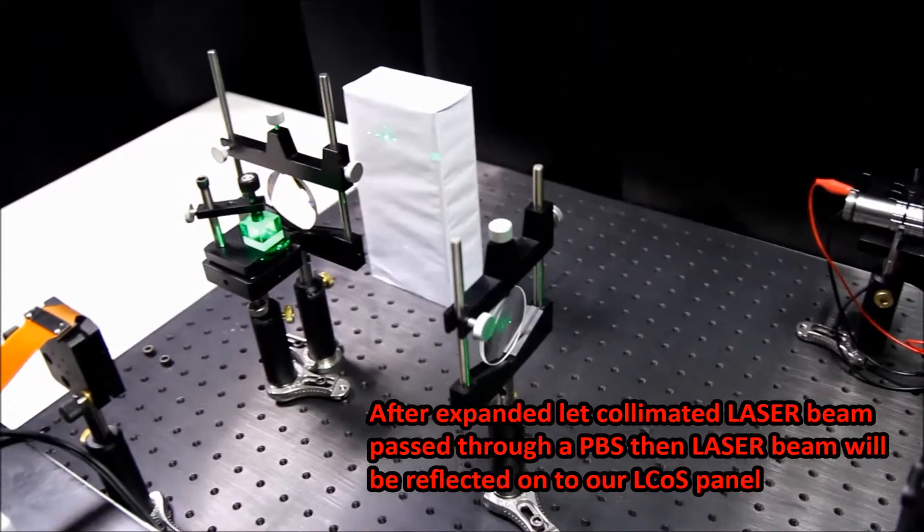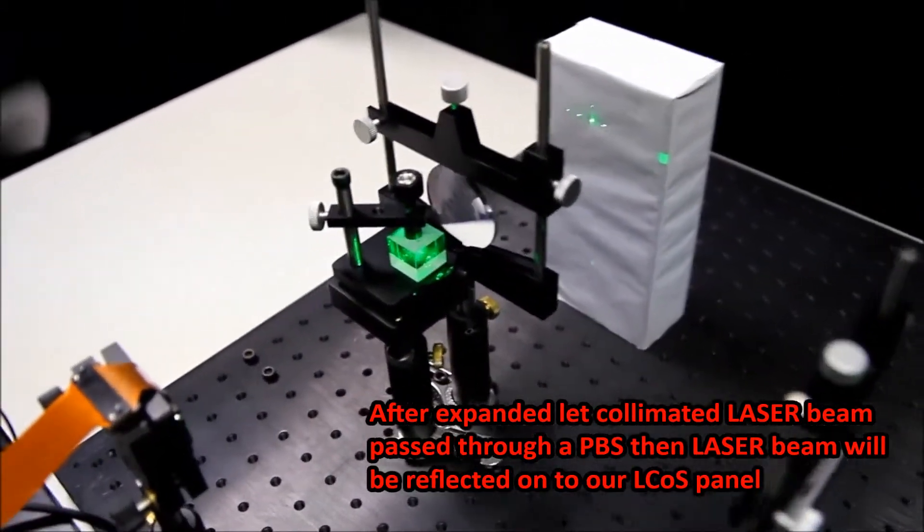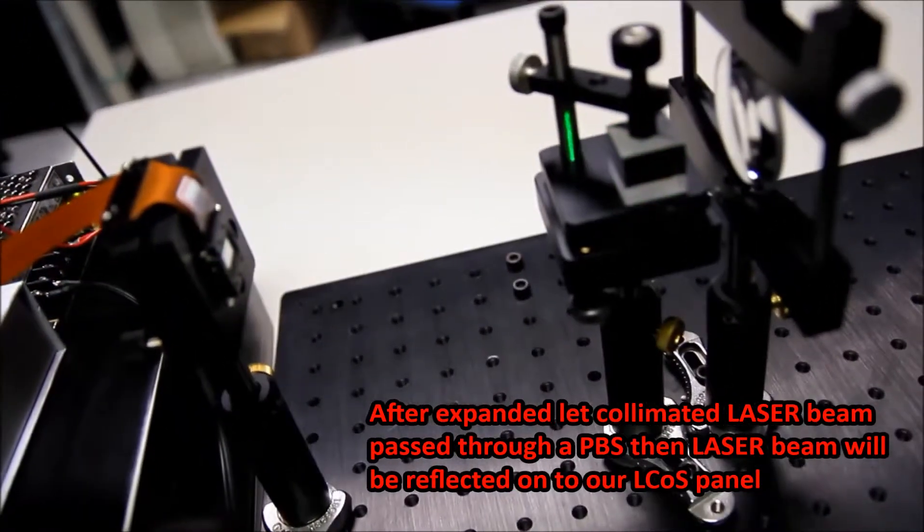After expanded, the collimated laser beam passes through a PBS. Then the laser beam will be reflected onto our liquid crystal panel.